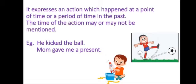The verb in the first sentence, 'he kicked the ball,' is 'kicked.' We usually make the past form by adding -ed to the verb. But some verbs have different past forms. You see that in the second sentence. The verb in the second sentence is 'gave' — mom gave me a present. Gave is the past tense of the verb give. These are irregular verbs.